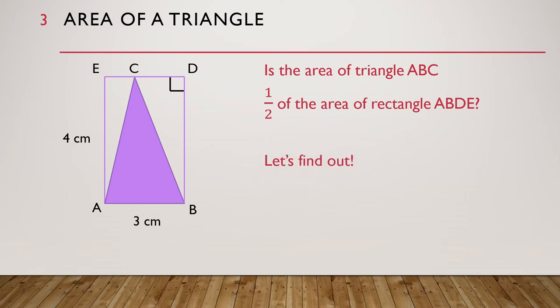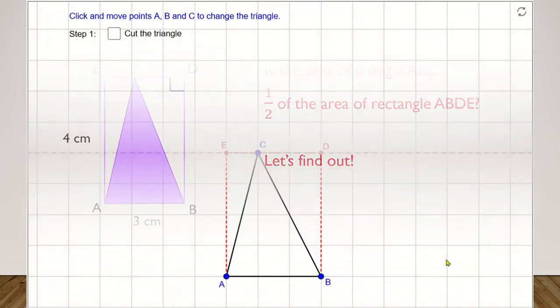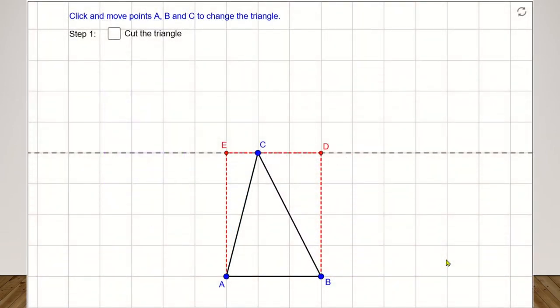Let's find out with a GeoGebra activity. You can find the link to the GeoGebra activity below this video. When you open the GeoGebra activity, you should see this. We have triangle ABC and rectangle ABDE.